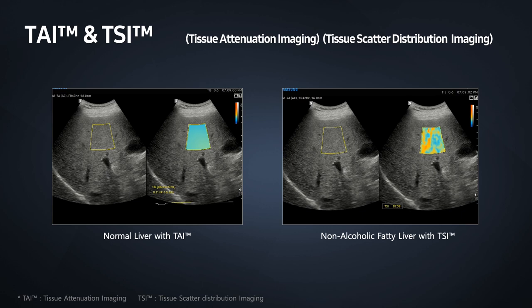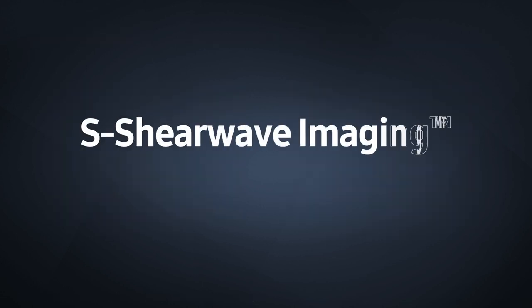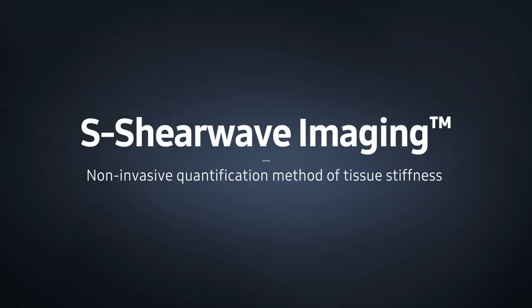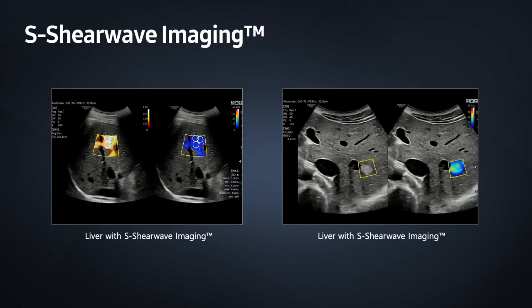Tissue scatter distribution imaging (TSI) provides a quantitative measurement of tissue scatter distribution to assess fatty liver changes. The distribution of scatter changes in relation to the degree of fat within the liver. S-shear wave imaging provides noninvasive quantitative assessment of tissue stiffness for more confident evaluation of liver parenchyma. The color-coded S-shear wave elastogram provides more confident placement of ROI cursors.